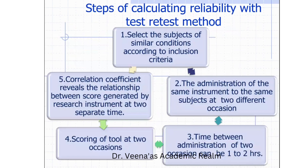Step 2 is administration of the same instrument to the same subjects at two different occasions or two different times — the same tool to the same subjects at different times. Step 3 is the time between administration of the two occasions, which can be one to two hours. Step 4 is scoring of the tool at the two occasions — Test 1 will have one score and Test 2 will have a different score. Step 5 is computing the correlation coefficient, which reveals the relationship between scores generated by the research instrument at the two separate times.